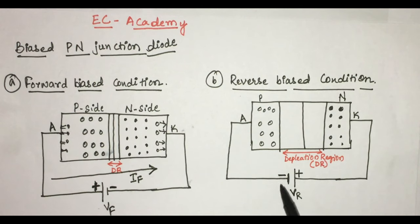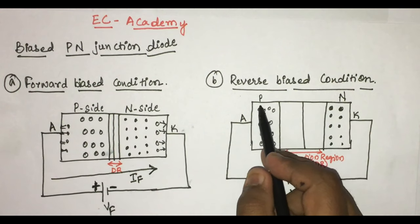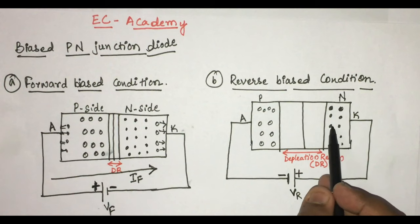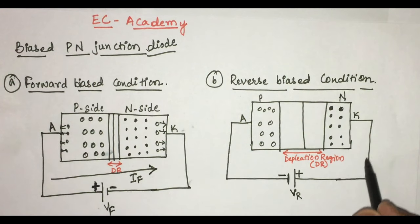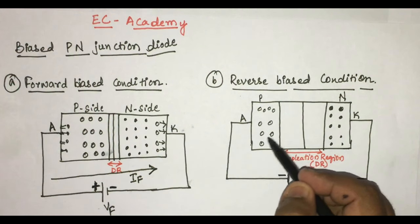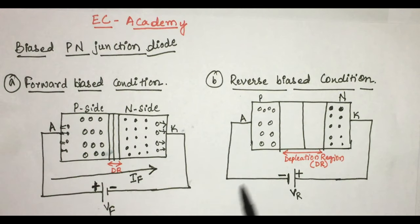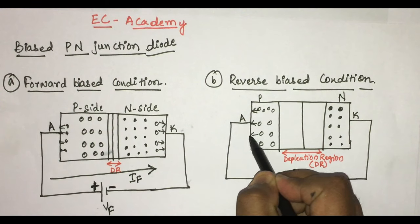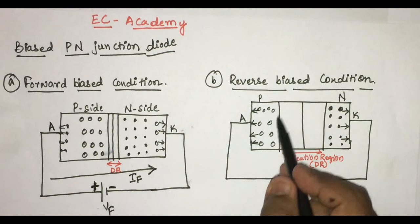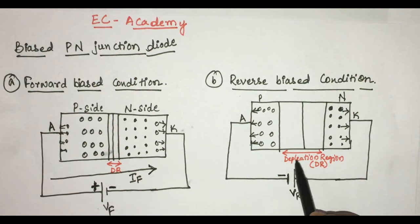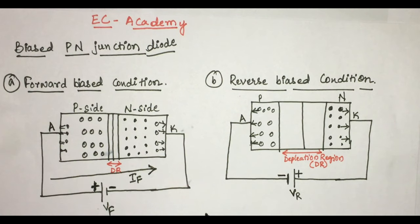In reverse bias condition, the negative terminal of an external voltage source is connected to the p side and the positive terminal of the external voltage source is connected to the n side. This condition is known as reverse bias condition of a p-n junction diode. Under this condition, the electrons from the n side are attracted towards the positive terminal of the external voltage source, and the holes in the p side are attracted towards the negative terminal of the external voltage source. Due to this, the width of the depletion region increases and the barrier potential inside the depletion region also increases. Hence there will be no current flow when the diode is connected in reverse bias condition.